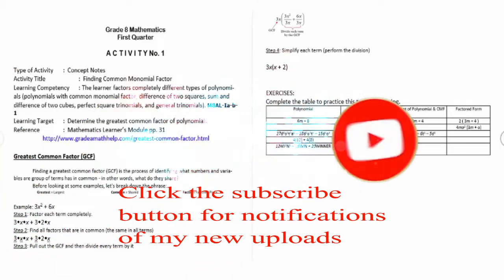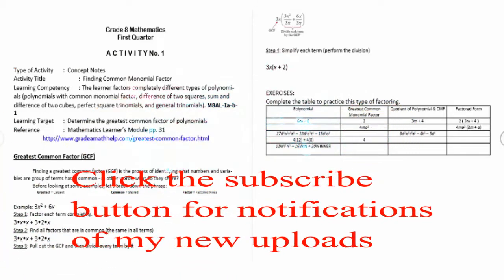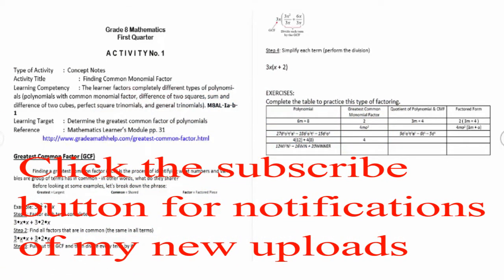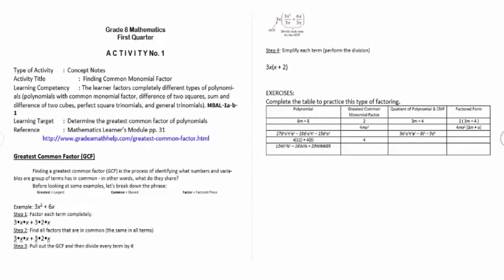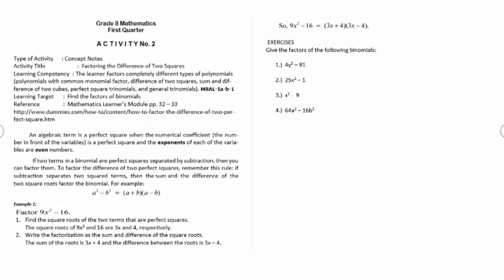Here are the different activity sheets that can be used for home studying in Grade 8 Mathematics. This is the first quarter. Activity number one is finding common monomial factors. Activity number two is about factoring the difference of two squares.